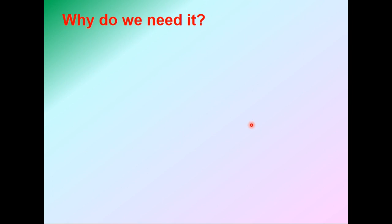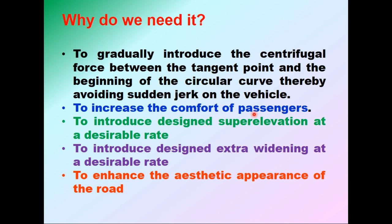A vehicle experiences centrifugal force as soon as it enters a horizontal curve of radius R, whereas there is no such force on the tangent length. If the curve is attained suddenly, this force will also develop suddenly, causing a sudden jerk to the vehicle and discomfort to passengers. A transition curve is provided to gradually introduce the centrifugal force between the tangent point and the beginning of the circular curve, thereby avoiding sudden jerk. It also increases passenger comfort, introduces super elevation at a desirable rate, introduces extra widening, and enhances the aesthetic appearance of the road.